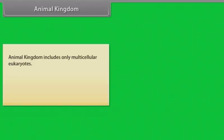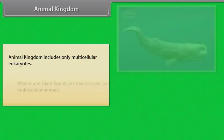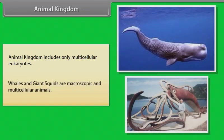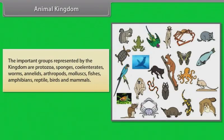Animal kingdom includes only multicellular eukaryotes. Whales and giant squids are macroscopic and multicellular animals. The important groups represented by the kingdom are protozoa, sponges, cnidates, worms, annelids, arthropods,